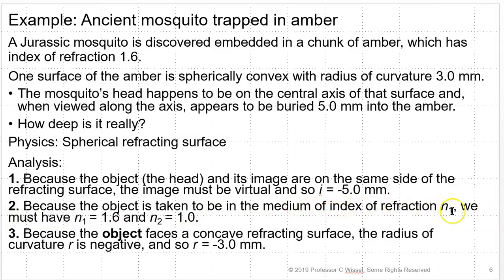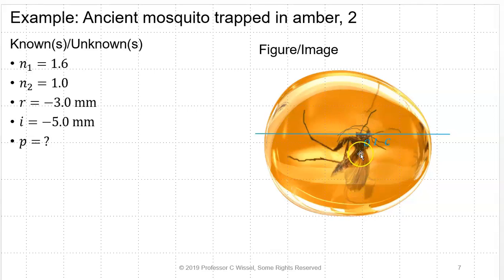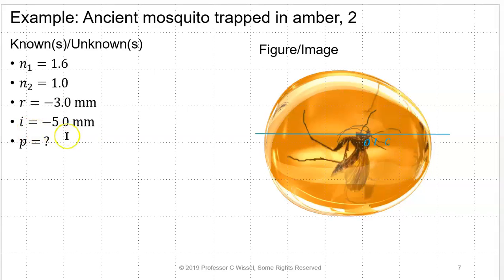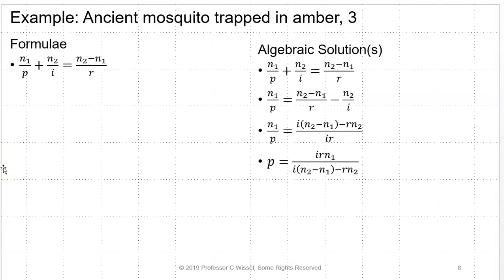The object is taken to be in the medium with index of refraction N1. We have N1 equals 1.6 and N2 equals 1 because it's embedded in the medium. The object faces a concave refracting surface, so the radius of curvature is negative: R equals negative 3 millimeters. Be very careful — the biggest thing is getting confused as to what you're looking at. Here's the diagram: the image forms inside the amber, the object is the mosquito's head, and here's the center of curvature for the surface. Knowns: N1 = 1.6, N2 = 1, R = −3 mm, I = −5 mm. Unknown: P.